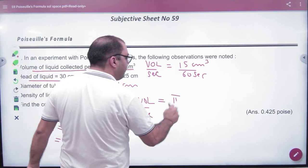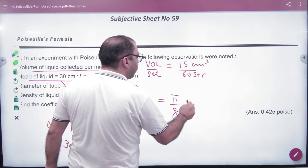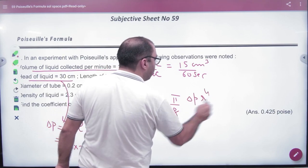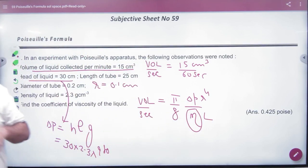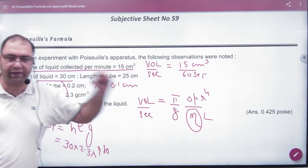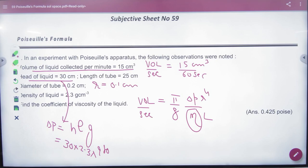Volume flowing per second. Pi by 8 into delta P, R to the power 4, by H eta times L. So you have to take H. All values are given. All CGS answer. Poiseuille's in Poiseuille's. Method clear here.